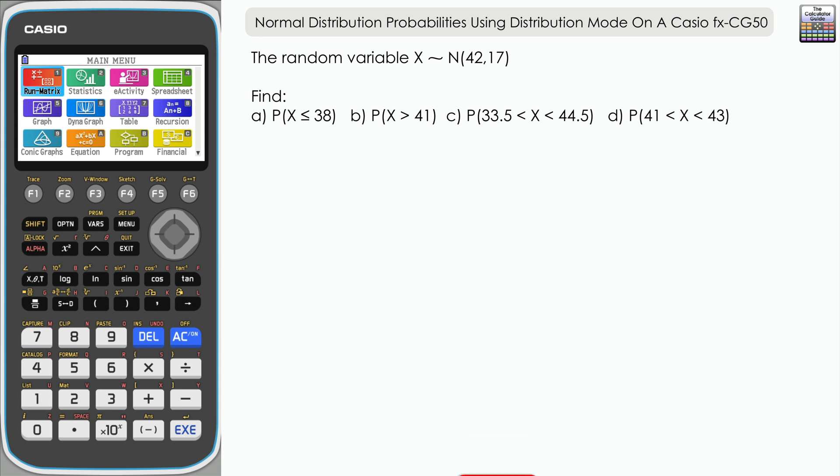Let's take a look at the question. The random variable X is distributed normally with a mean of 42 and a variance of 17, and we've got to find the following probabilities.